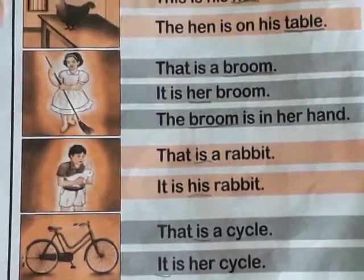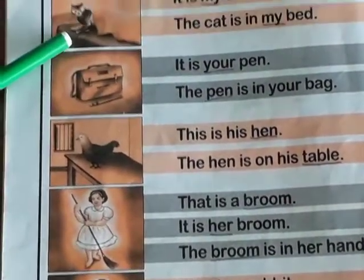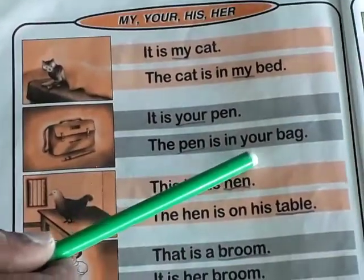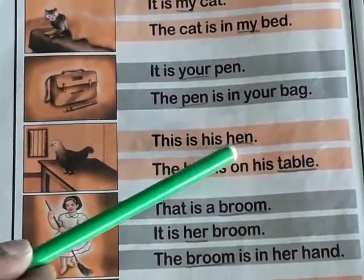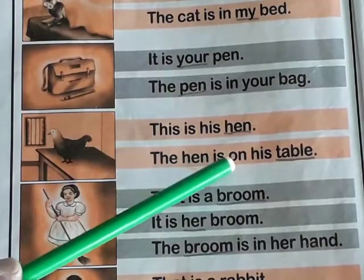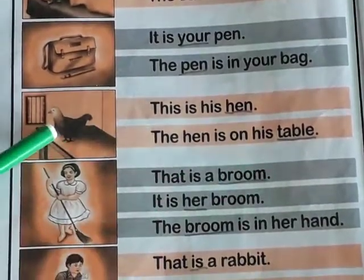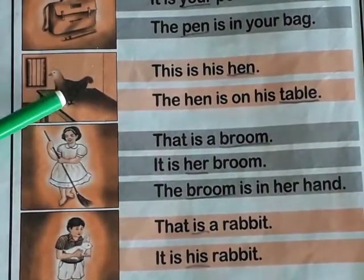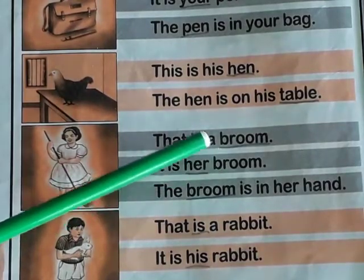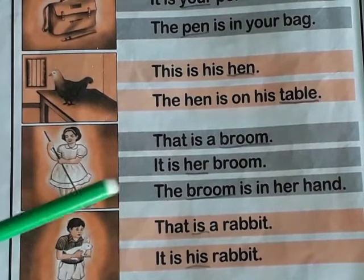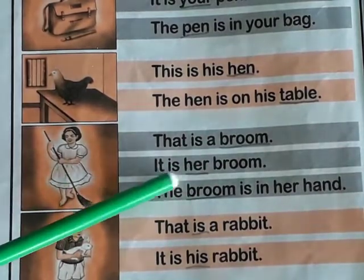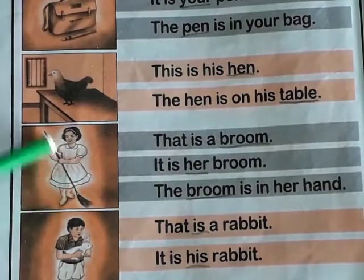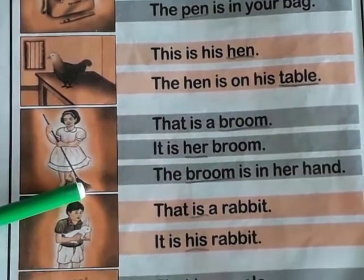The cat sits in my bed. It is your pen. This is his hand. This is the picture of a hand. The hand is on his table. This is a broom. This is the picture of a broom. It is her broom. Her is used for a female person, so use her. The broom is in her hand. Broom is used to clean our house.